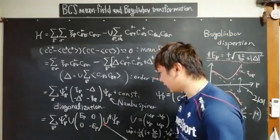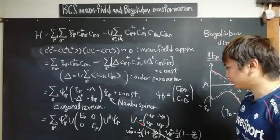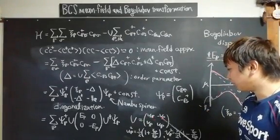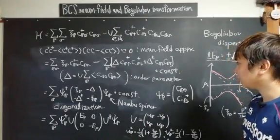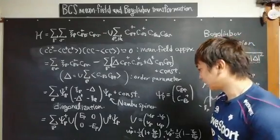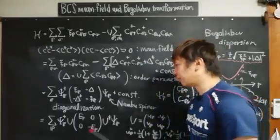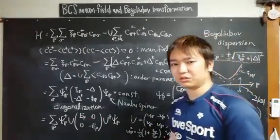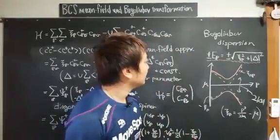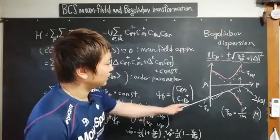Here U is the unitary matrix for this canonical transformation, which involves two parameters. Sometimes it is called the coherence factor for BCS superconductivity. So then I'd like to explain the detail of this quasi-particle dispersion.